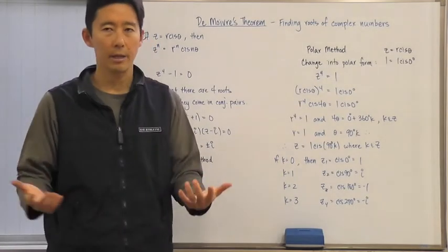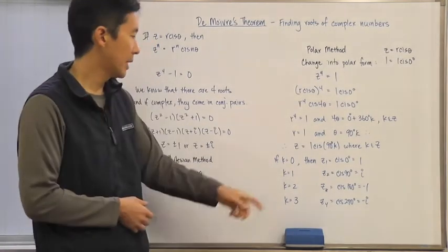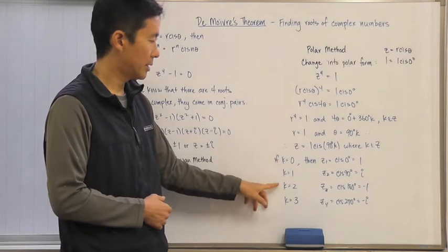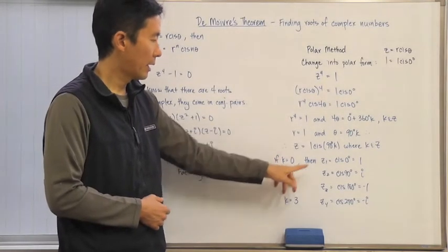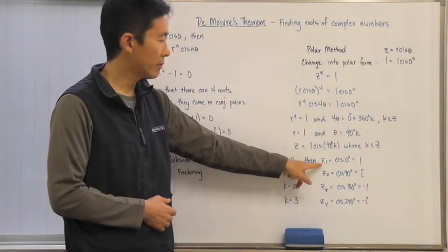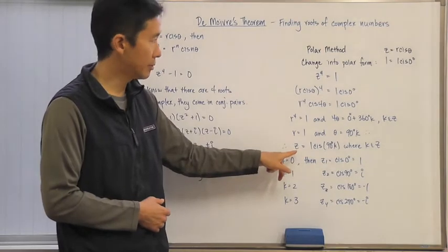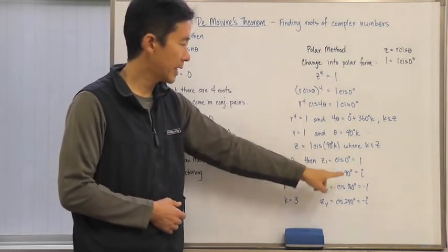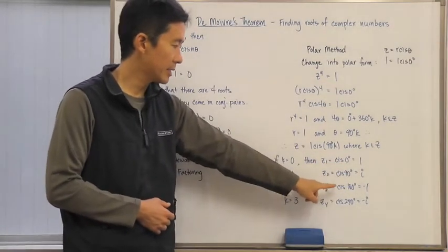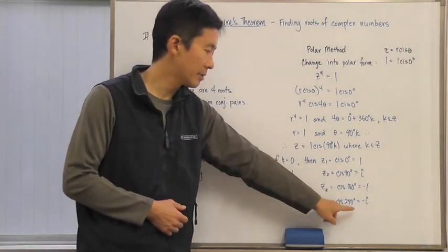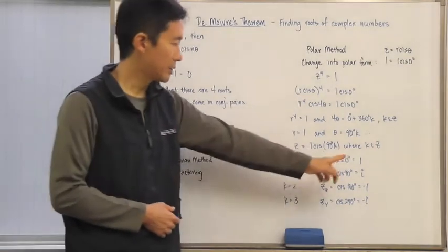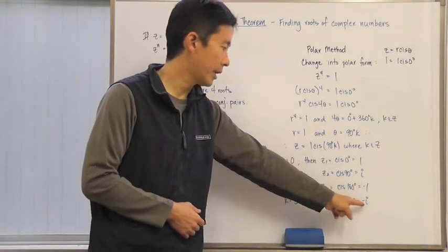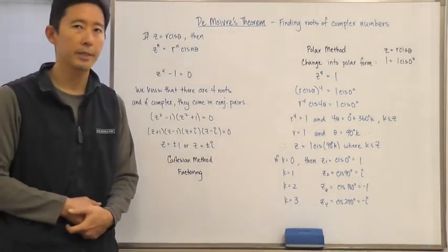Now, if I want to find all of those values, I just let k equal particular integer values. I'll start off with zero, one, two, three. And so, we know that the associated complex roots in polar form are cis 0 degrees, cis 90 degrees, cis 180 degrees, and cis 270 degrees, which are 1, i, negative 1, negative i in Cartesian form, respectively.